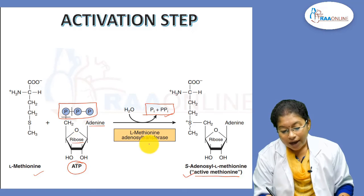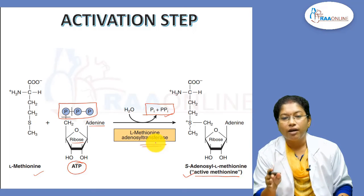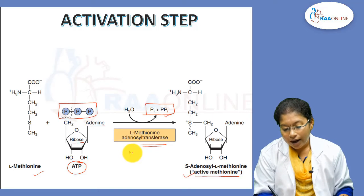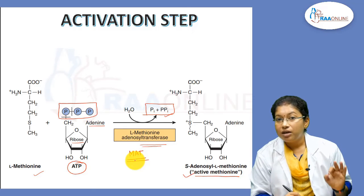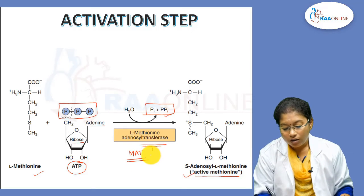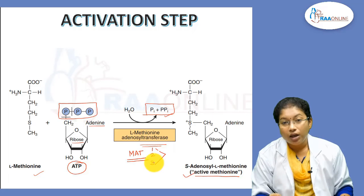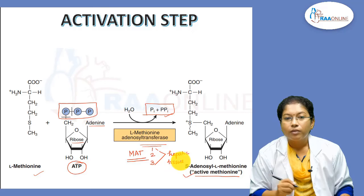The enzyme here is L-methionine adenosyl transferase, shortly called the MAT enzyme. This enzyme has three isoforms: one, two, and three. Among these, isoforms one and three are present in hepatic tissue.